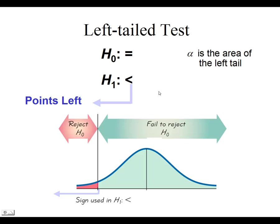If you are looking for a value for the parameter to be strictly lower than a number, then you only reject if that test statistic is significantly lower than the proposed value. So if your test statistic is way to the left, then you determine that you're going to reject.